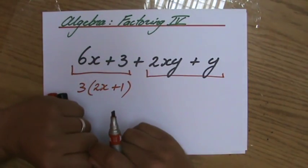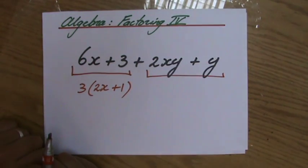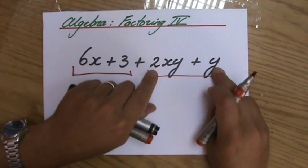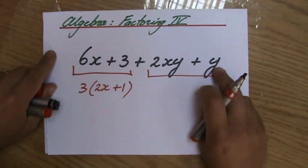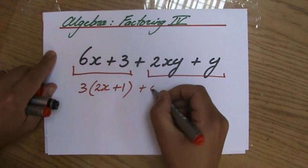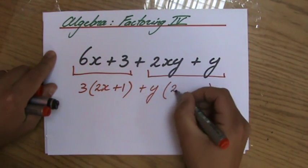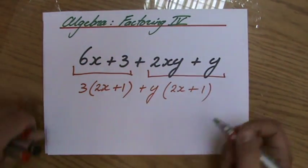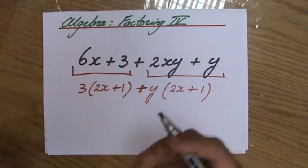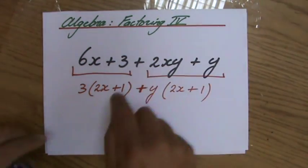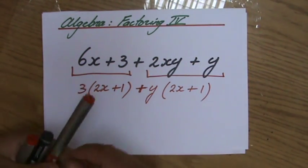You're going to ask yourself the same question for group 2. That's why we call it grouping. Is there a common factor for group 2? So I look at those two terms, 2xy plus y. And then you tell yourself, yes, the common factor is y. So a positive y. And I am putting in my brackets then, 2x plus 1. Don't forget that positive sign here, because you're taking out a positive y. And then you notice that what is inside those brackets in both groups is the same, 2x plus 1.